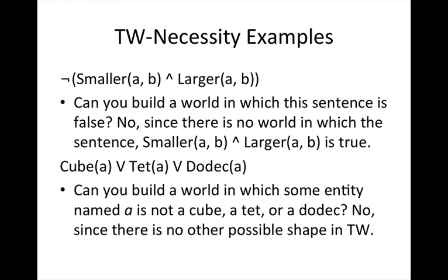Now take a look at the second example: 'A is a cube, a tet, or a dodek.' Recall that one of the features of Tarski's World is that there are three and only three possible shapes — cubes, tets, and dodeks. Since a name cannot exist without being attached to a shape or a size, entity A would have to be one of these three shapes. You have a Tarski's World necessity when it is impossible to build a world in which the sentence is false — and you can use Tarski's World to test this out.